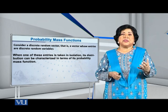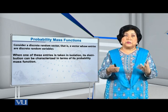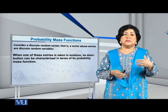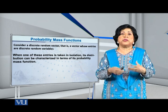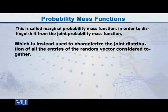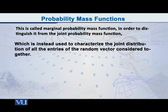When we have more than one random variable, the PMF we considered in isolation of the others is called the marginal probability mass function. This word 'marginal' distinguishes this particular PMF from the joint PMF.